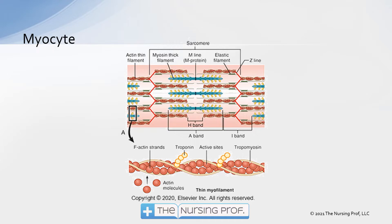Now let's break this down further and look at one myocyte. You can see all the different components of the myocyte. We have the M line, the M protein, elastic filaments, and fibers — they slide over each other in the sarcomere, and that's what causes the contraction. Notice the inset at the bottom of the page demonstrating where troponin sits on this strand. Troponin is one of the functional pieces of the cardiac muscle, which is why when a patient has a myocardial infarction or heart failure with significant strain, we see elevations in troponin levels as those cardiac cells are stressed.